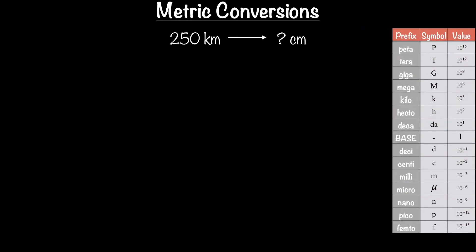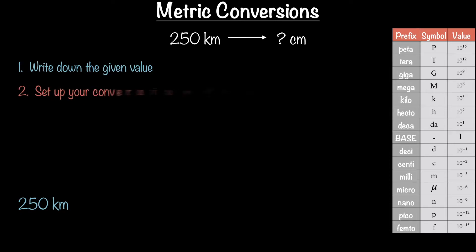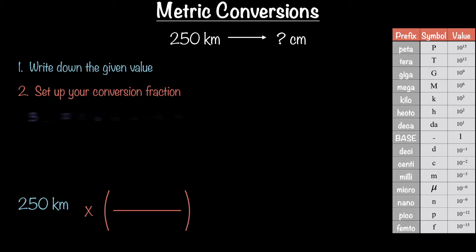Let's suppose we have to convert 250 kilometers into centimeters. Step one: write down the given value — in this case, 250 kilometers. Step two: set up your conversion fraction. This is done by multiplying our given value of 250 kilometers by some fraction of units. Don't be scared by the word fraction — all it means is some value on the top divided by some value on the bottom.